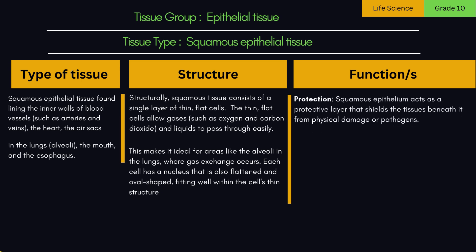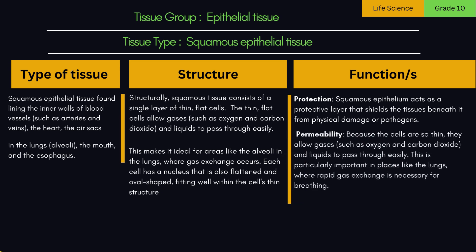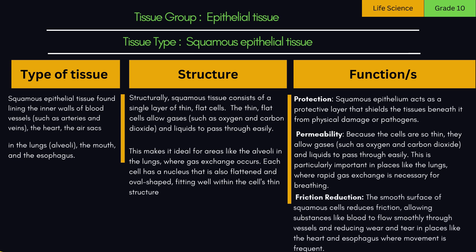Functions of squamous tissue: 1. Protection — squamous epithelium acts as a protective layer that shields the tissues beneath it from physical damage or pathogens. 2. Permeability — because the cells are so thin, they allow gases, such as oxygen and carbon dioxide, and liquids to pass through easily. This is particularly important in the lungs, where rapid gas exchange is necessary for breathing. 3. Friction reduction — the smooth surface of squamous cells reduces friction, allowing substances like blood to flow smoothly through vessels, and reducing wear and tear in places like the heart and esophagus, where movement is frequent.